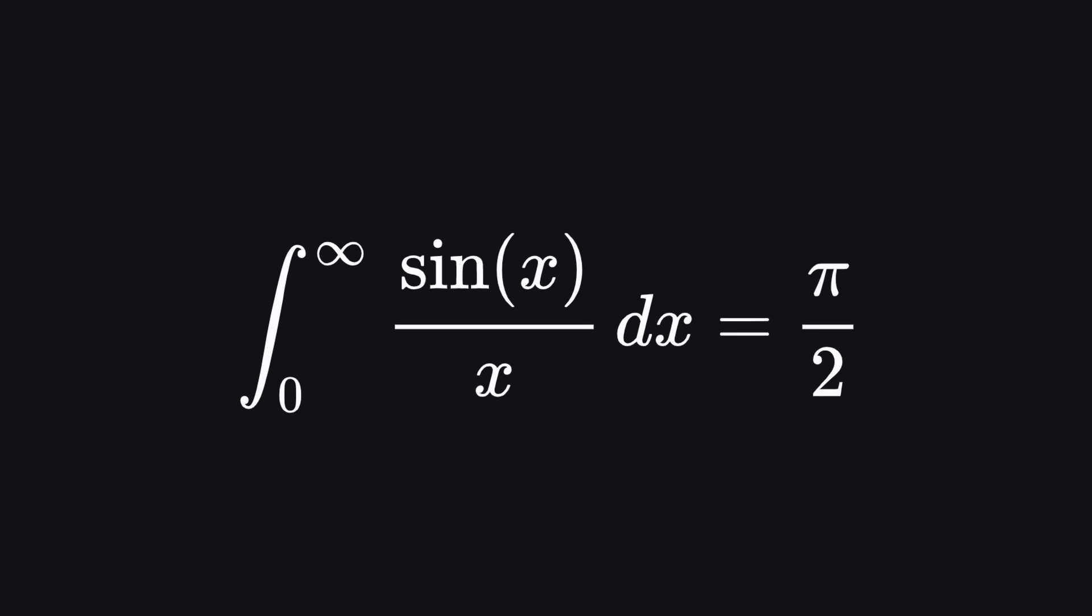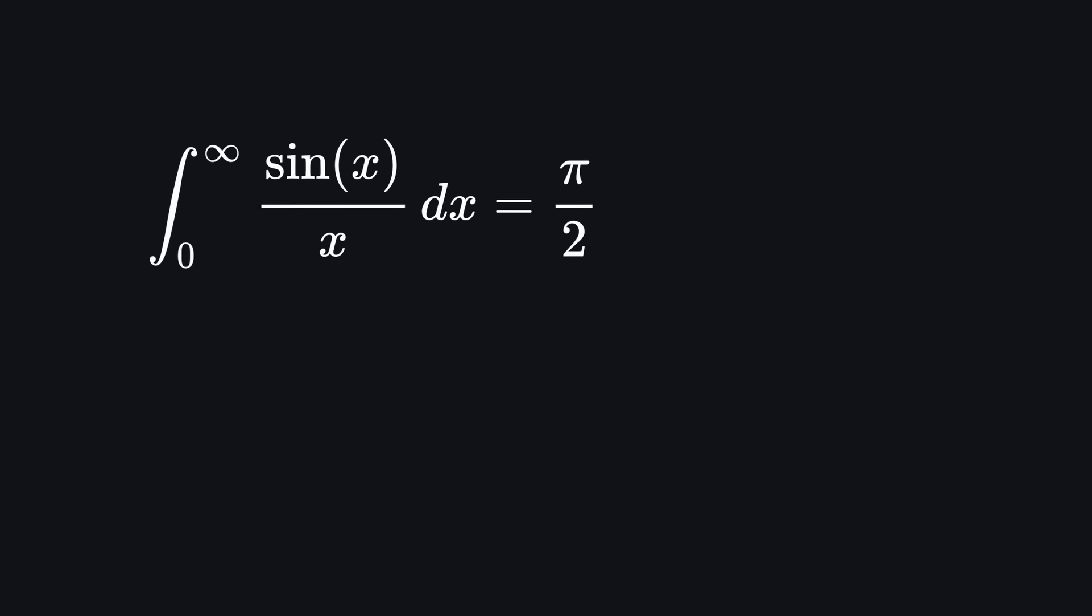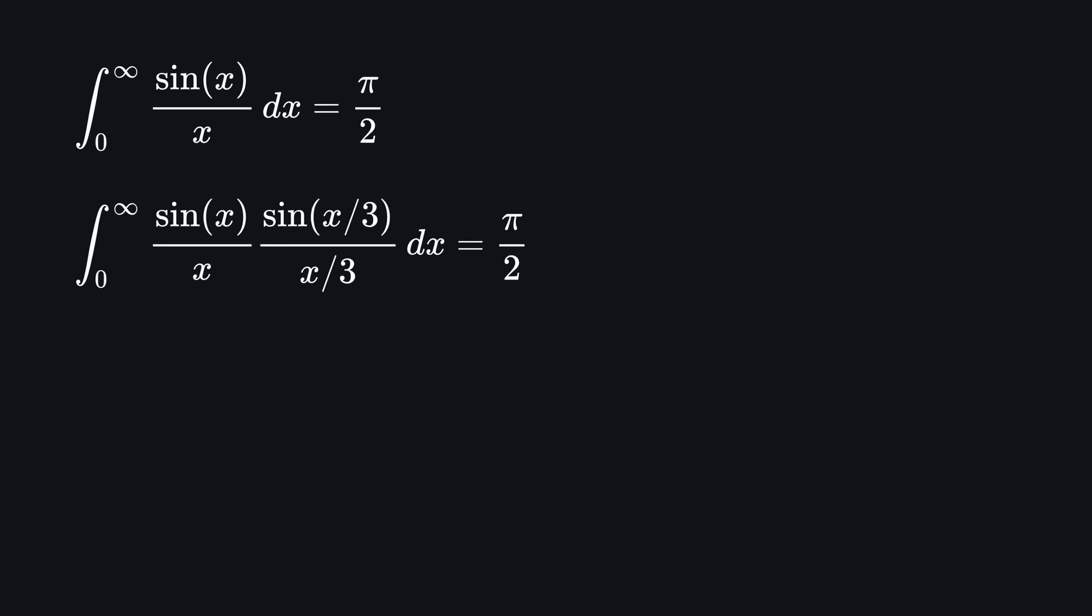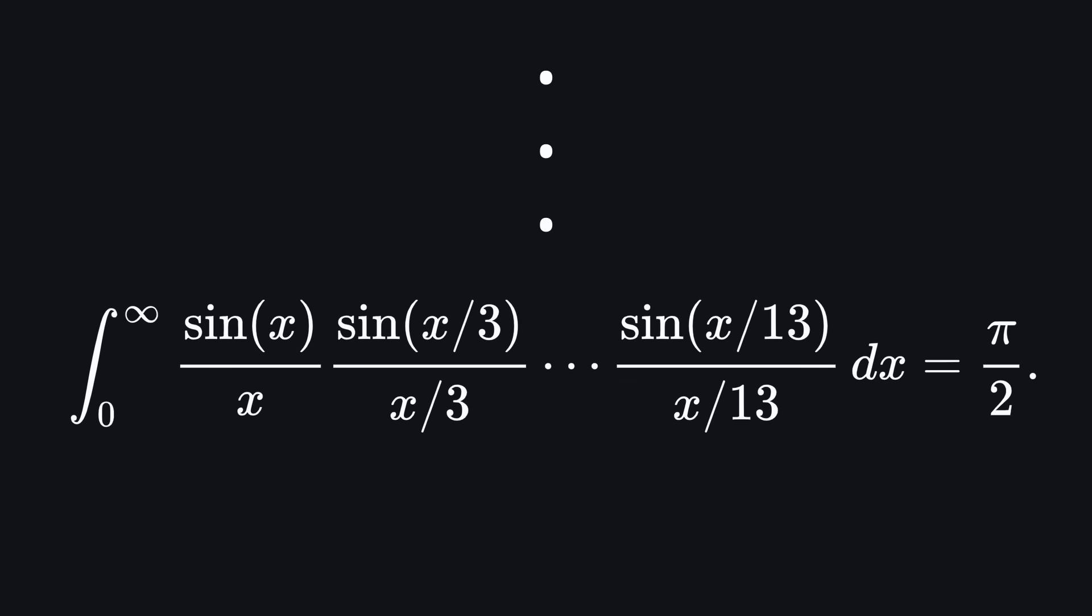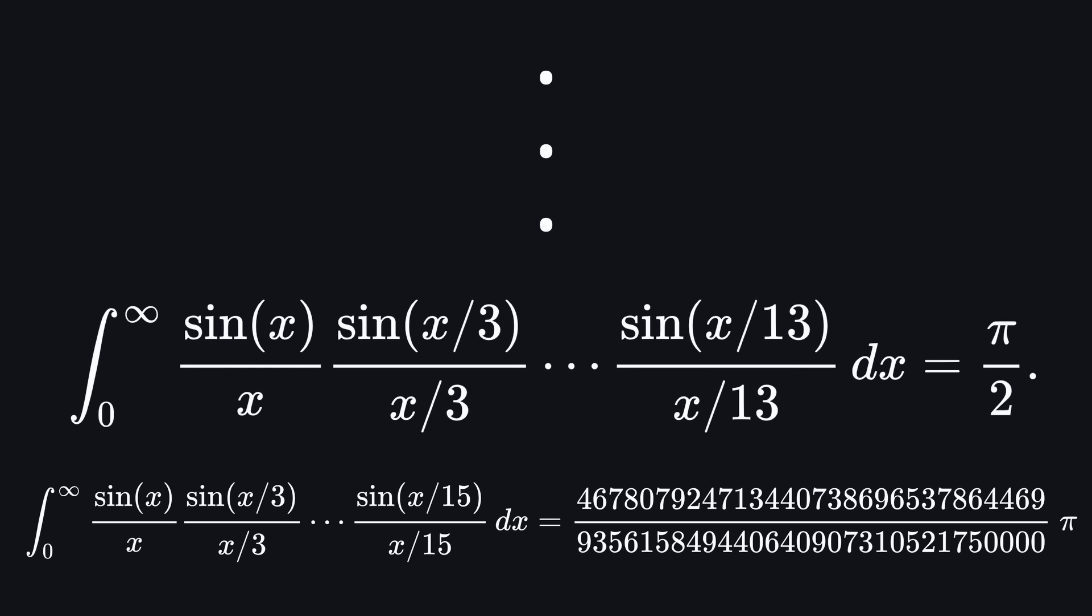4. Why are singular limits? A singular limit is a case where the behavior of a sequence suddenly and unpredictably changes. A particularly stunning example is this sequence of integrals over the sine function where you add more factors under the integral. The first gives pi over 2, the second gives pi over 2, the third gives pi over 2. These are exact numbers, not approximations. Yet, when you take 15 factors, it stops working.